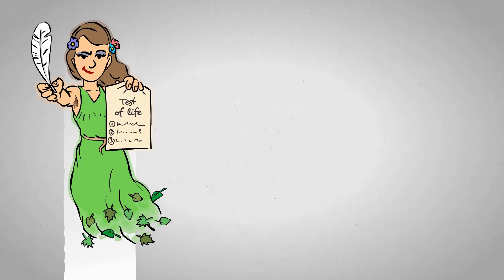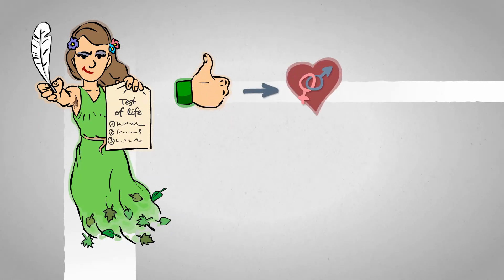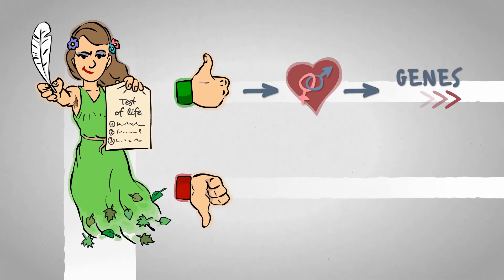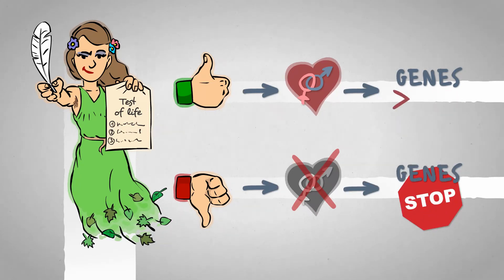Nature will put every living being to test in its own environment. Those individuals that make it through can pass on their genes to their offspring. Those that fail, however, will mostly die without reproducing, thus their genes will not appear in the next generation.